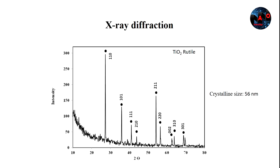This figure represents the XRD pattern of synthesized titanium dioxide nanoparticles. For these nanoparticles, the diffractions were observed at 27, 36, 41, 44, 54, 56, 62, 64, and 69 degrees, indicating that the major crystalline phase of the titanium dioxide nanoparticles were rutile.